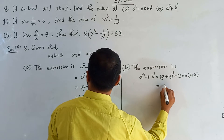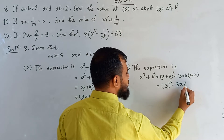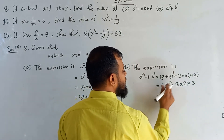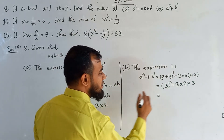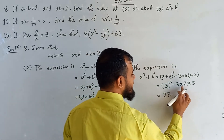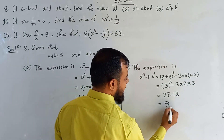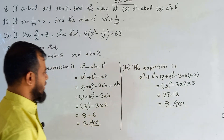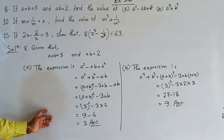The value of A plus B is 3. So it is 3 cubed minus 3 into the value of AB which is 2, multiplied by A plus B which is 3. Now 3 cubed means 3 multiplied 3 times: 3 times 3 is 9, times 3 is 27. Minus 3 times 2 times 3 is 18. So 27 minus 18 is 9, which is our value of A cubed plus B cubed. I hope you have understood how to solve this problem.